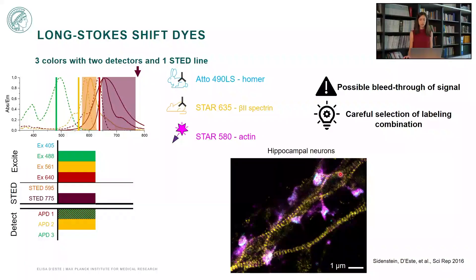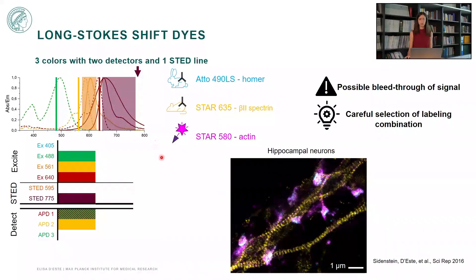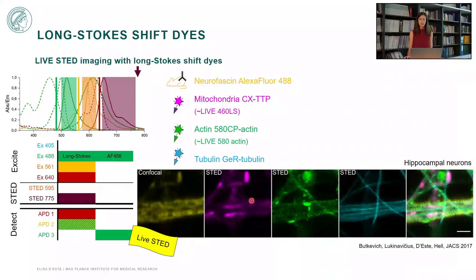Here is an example from a publication of some years ago in which we used a synaptic marker and actin-binding proteins labeled with primary and secondary antibodies, and actin labeled with a small probe, phalloidin. This approach can also be applied to live-cell imaging, since we now have long Stokes shift dyes that are membrane permeable and can be used in living cells.